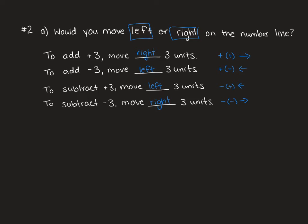One other thing that you might notice is if you have one of each symbol, so one positive one negative—you add a negative or you subtract a positive—we go to the left. If you have two of the same symbol we go to the right.